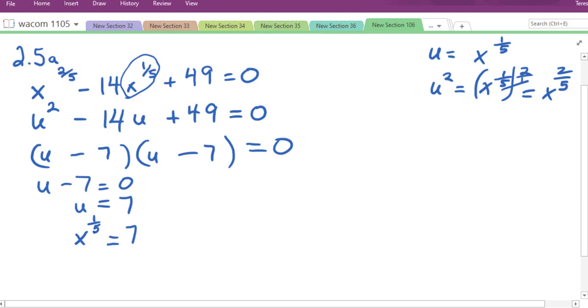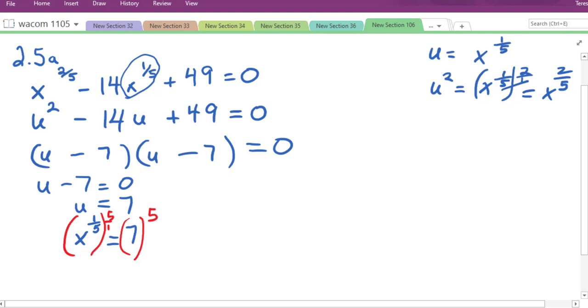And to solve for this, you're going to raise this to a power that would give you 1 for the exponent of x. So if we raise 1 fifth to the power of 5, those exponents would multiply. So we're going to raise x to the 1 fifth to the fifth power. You have to do the same thing on the other side. This is 5 over 1. So they multiply, and they will actually just cancel. The 5s will cancel. The 1s will cancel. It gives us x to the 1st, which is x. X is isolated. That's what we want. We have to work out 7 to the 5th.